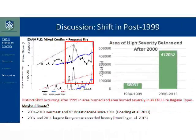We noticed a distinct shift in increasing trends after 1999 — from 2000 onward, there's a dramatic increase in every ERU fire regime type. If we look more closely at area burned severely from 2000 to 2013, it's nearly seven times that of 1984 to 1990. Why? Climate is likely a key player — records from 2000 to 2010 show it was the warmest and fourth driest decade since 1901, and we know 2002 and 2011 had the largest fires in recorded history. But further research will have to determine that definitively.